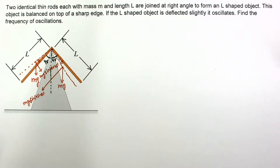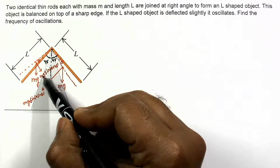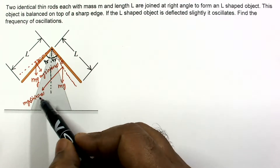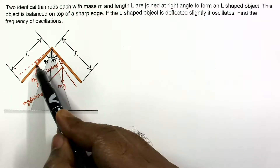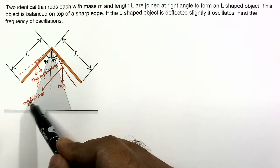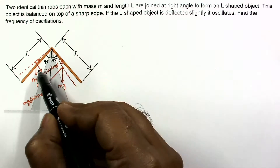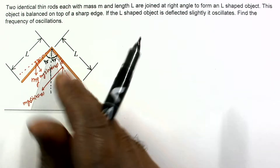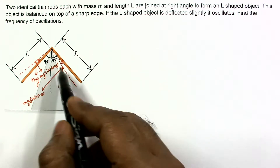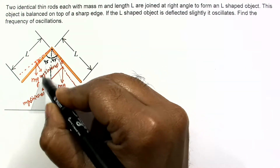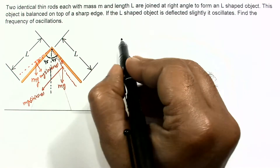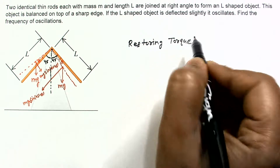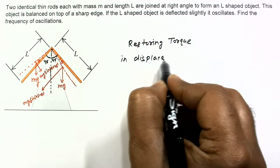We can see that this angle is slightly higher — 45 plus theta — and this angle is slightly lower — 45 minus theta. So the torque of this mg will be higher compared to the torque of the other mg. This mg will apply an anti-clockwise torque, so the difference of these two torques will be in the anti-clockwise sense, providing a restoring torque. These two mg forces are providing the restoring torque in the displaced position.